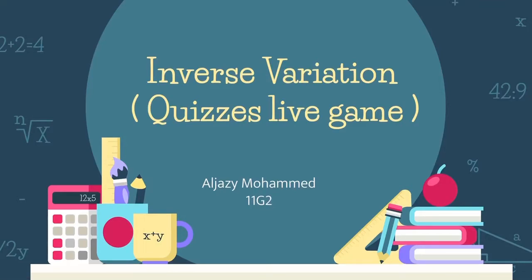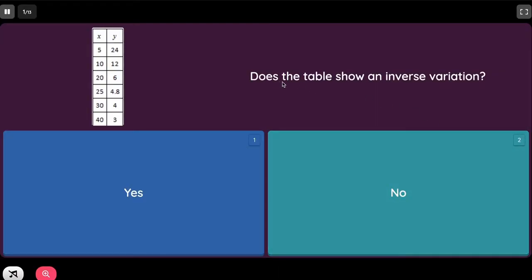Inverse variation quizzes live game. Does the table show an inverse variation? The first step you'll have to do is multiply x by y. 5 times 24 equals 120, 10 times 12 equals 120.